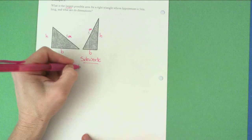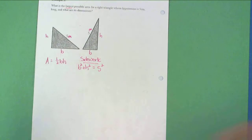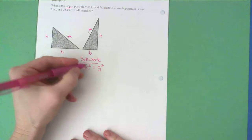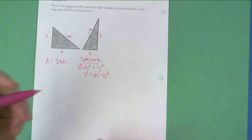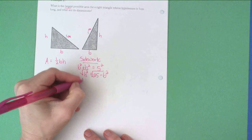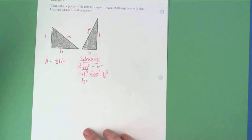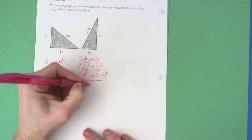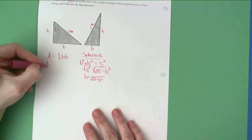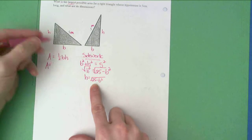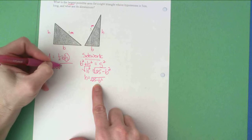So if I write the equation b squared plus h squared equals five squared, I can solve either for b or h. In this video, I'm just going to solve for h. That gives me h squared equals 25 minus b squared. If I square root both sides to solve for h, I get h equals plus or minus the square root — but a negative height doesn't make sense, so h equals the square root of 25 minus b squared. Now I can substitute that back into the area equation and write area all in terms of b: one-half b times the square root of 25 minus b squared.